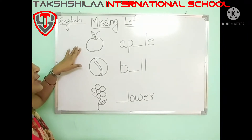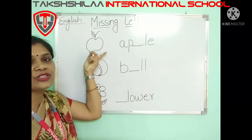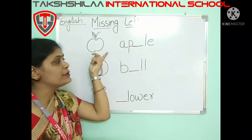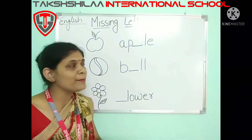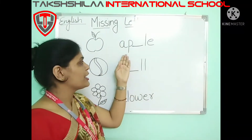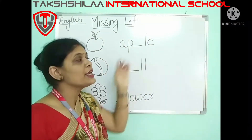First picture — what is the first picture? This is apple. And what is the spelling of apple? A, double P, L, E — apple.